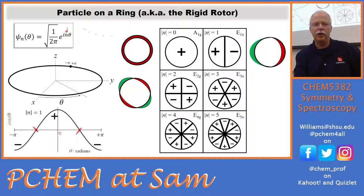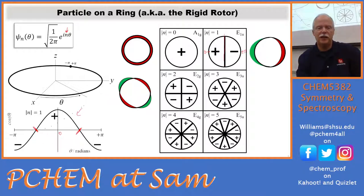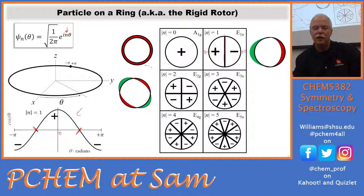If we put n = 1 — either plus one or minus one — we end up with the real part being a cosine. If this is zero here, it's positive going around to plus or minus pi. We draw that node across the middle because it's positive, crosses zero, and goes negative. We've taken the cosine and wrapped it around the ring, and this node in the middle shows us we have a positive side and a negative side. For n = 2, it gets more complex: we have two nodes; n = 3 has three nodes.